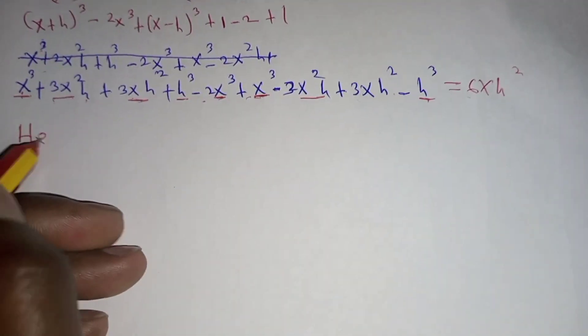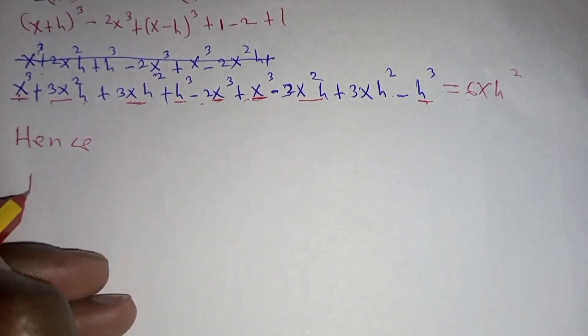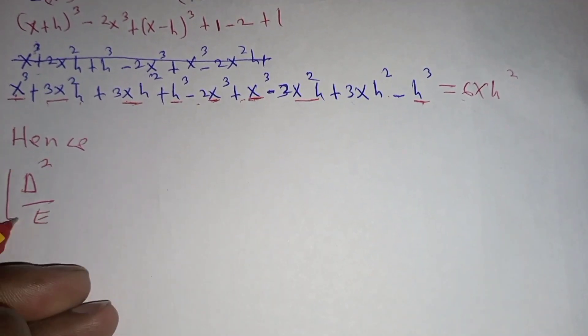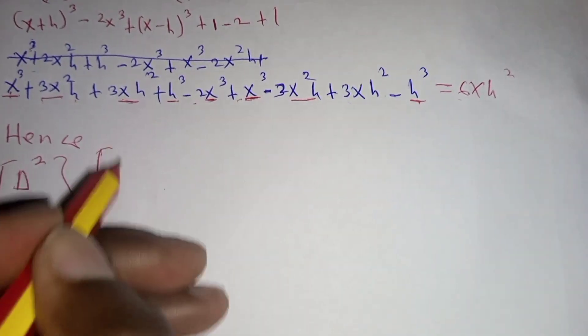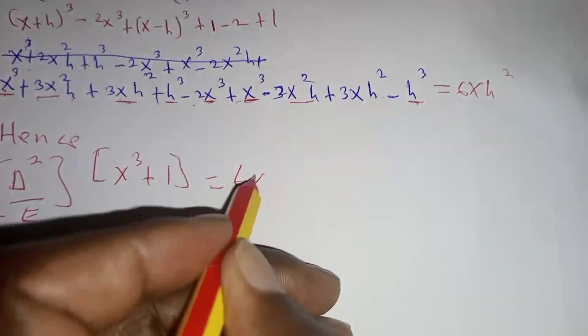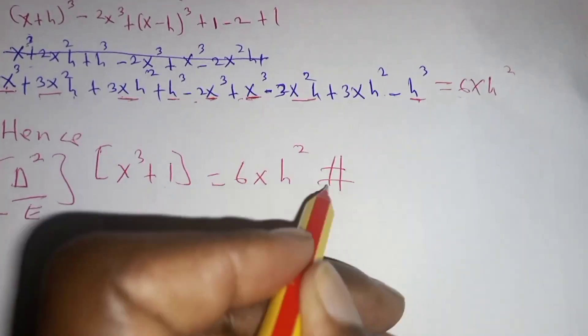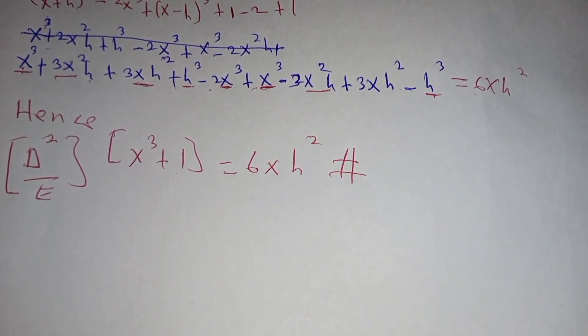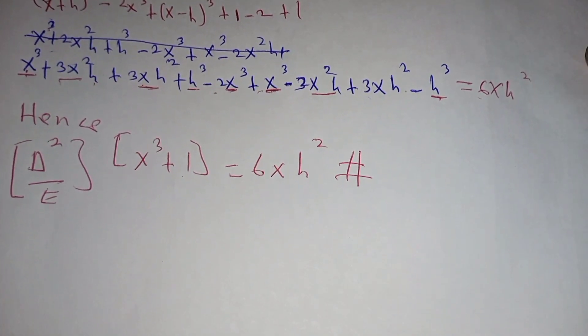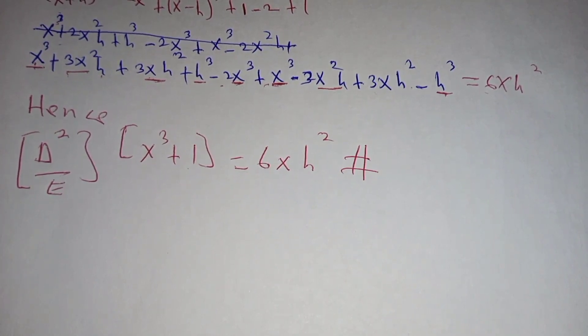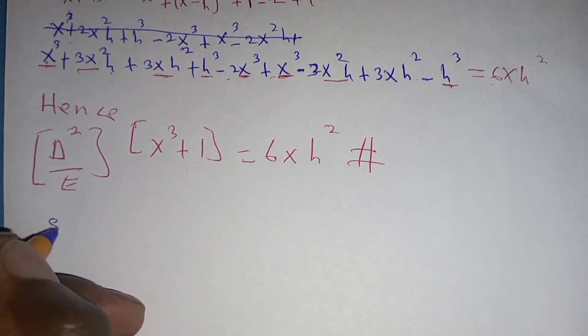6x h squared is equal to 6x h squared, and this multiplied by x cubic plus 1 is equal to 6x h squared. So that is the end of our proof. We have shown that that is correct. For more learning on this, subscribe to my YouTube channel so that we may keep on learning together.